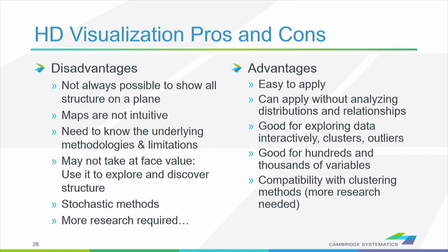As far as I know, there are not that many high-dimensional applications in the transportation field, so this is experimental. I don't know exactly how useful they are, but I think it's a good starting point to try to understand properties of our transportation system that we're not yet aware of. There are several disadvantages: it's not always possible to show all structure in a plane, the result is not intuitive, and you need to understand the underlying algorithms to interpret them. More research is required. The advantages are that they're easy to apply without analyzing distributions in your data, and they're good for hundreds and thousands of variables.